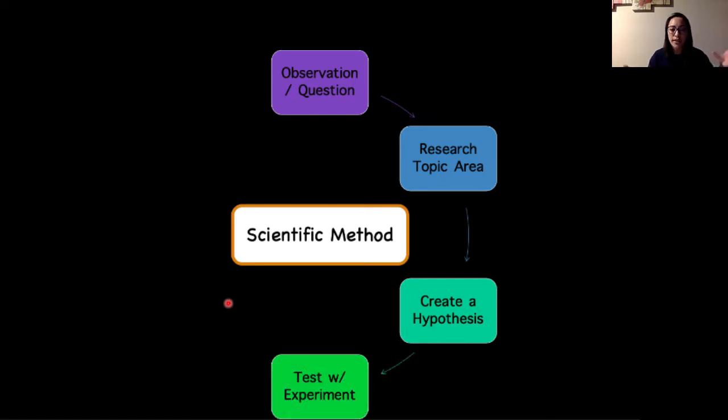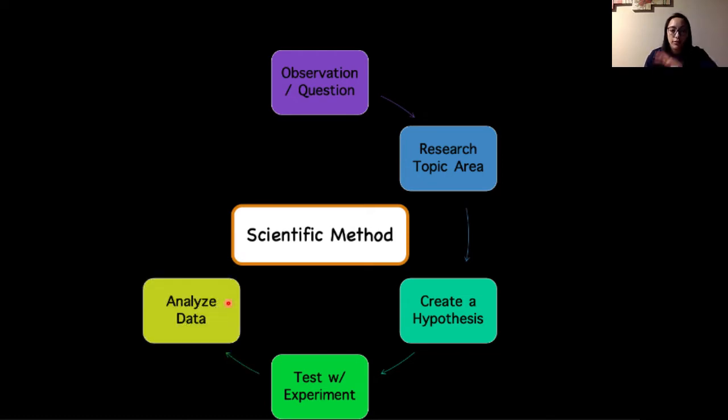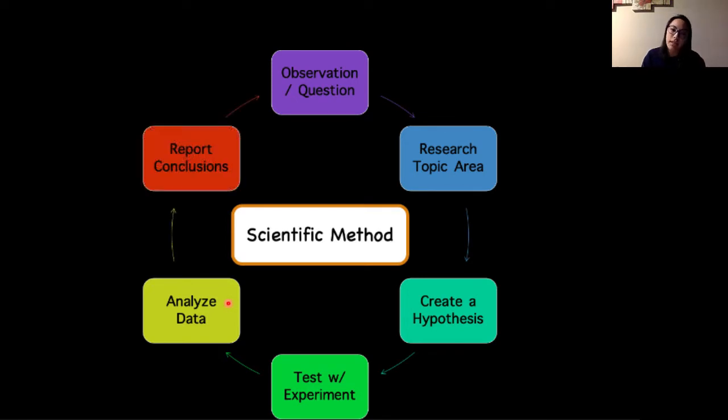You then create an experiment to test that hypothesis. From the data that you collect, you analyze it and report your conclusions. The statistical part of our class is primarily concerned with analyzing data. Typically, I give you the research question, the experimental design and the data, and then we analyze it and report conclusions based on the outcomes.